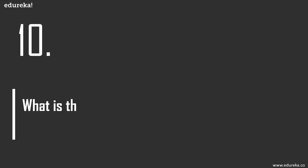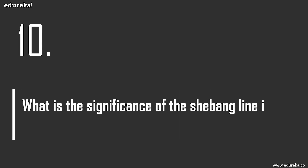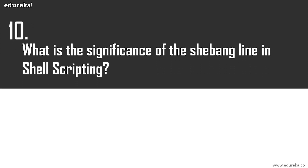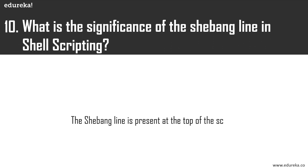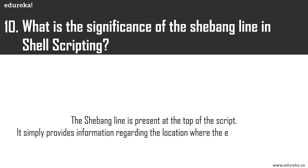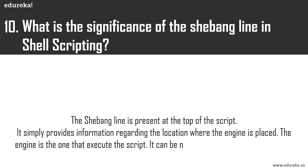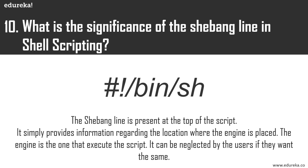What is the significance of the shebang line in shell scripting? The shebang line at the top of each script determines the location of the engine to be used to execute the script. It provides information regarding the location where the engine is placed and is neglected by some users who want to skip it.